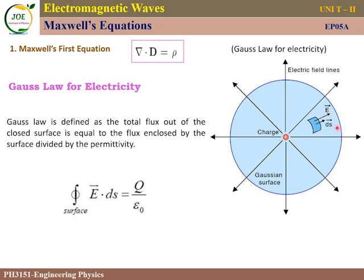The total flux out of a closed surface is equal to the flux enclosed by the surface — that is, charge divided by the permittivity of free space, epsilon naught. In Gauss law, the total flux of any closed surface is the surface integral of E dot dS, which equals 1 by epsilon naught times the total charge available inside the surface. This is Gauss law, and it is used as the basis for Maxwell's first equation.